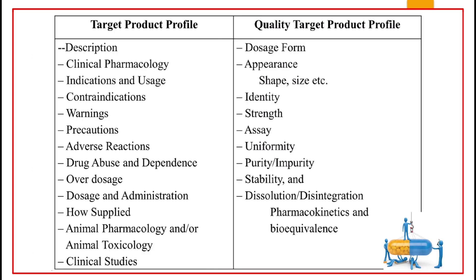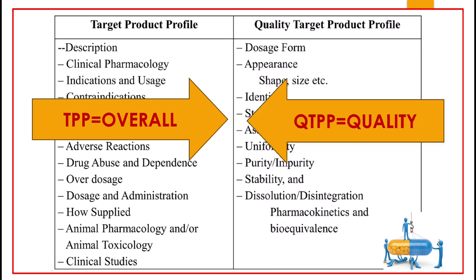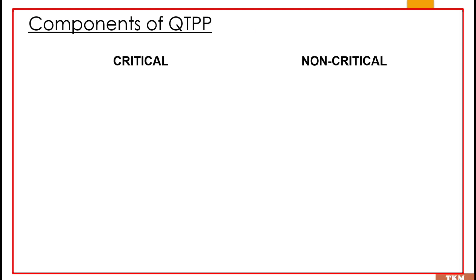The difference between TPP and QTPP: TPP constitutes the entire information about the drug product, from description through clinical studies. On the other hand, QTPP constitutes information related to the quality of the drug product — the characteristics that can affect product quality. So TPP covers overall information while QTPP covers factors that can affect quality.